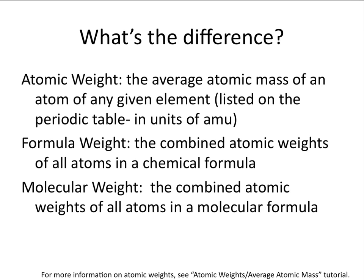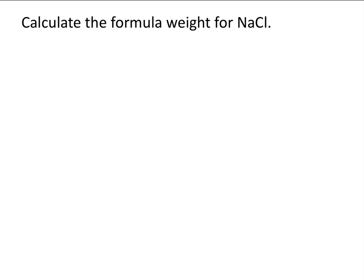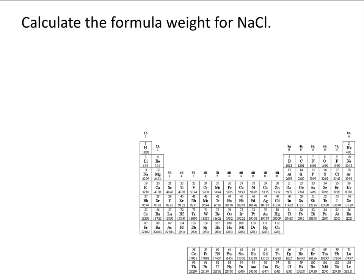Let's look at some examples of calculating formula and molecular weights. Calculate the formula weight for NaCl. To calculate the formula weight for NaCl, we need to look up the atomic weights for sodium and for chlorine. If we look on our periodic table, we'll see that the atomic weight for sodium is 22.99 AMU. In these tutorials, I will round all atomic weights to the nearest tenth, so sodium becomes 23.0 AMU.